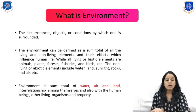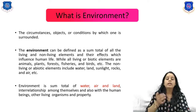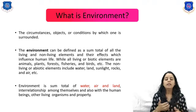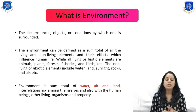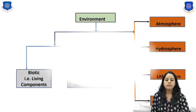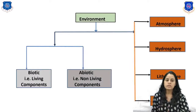The third definition of environment is that it is the sum total of air, water, noise, and land, along with the interrelations between them and also with human beings and other living organisms and their properties.